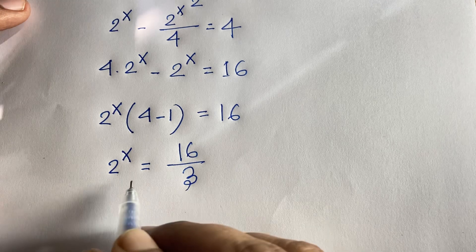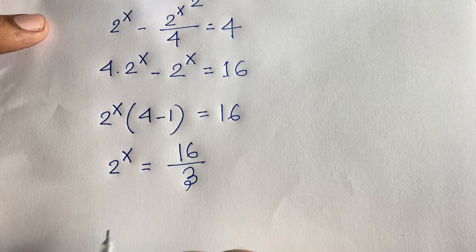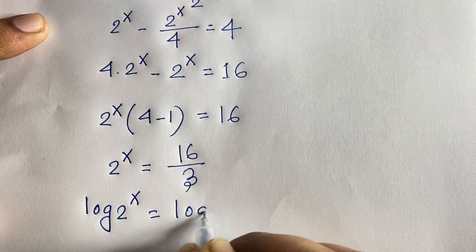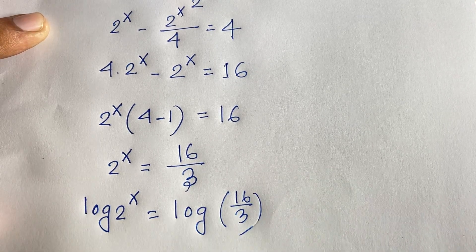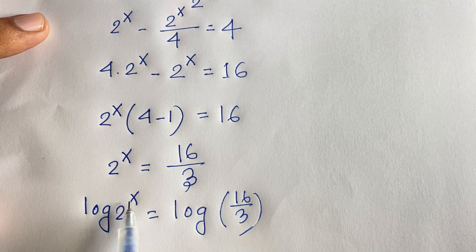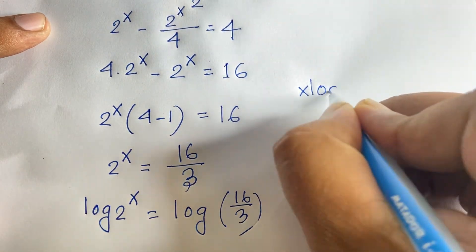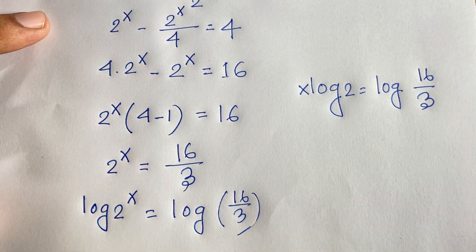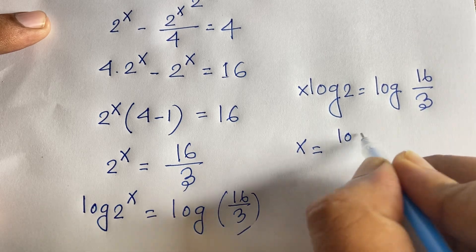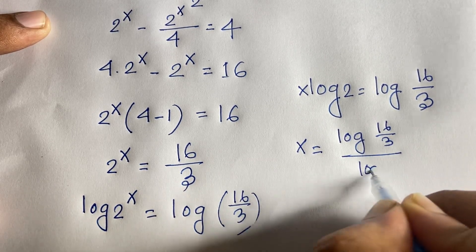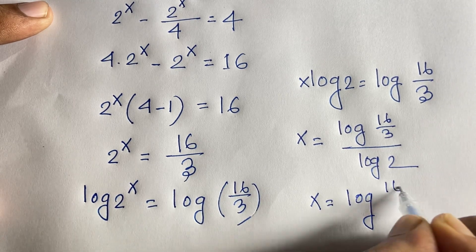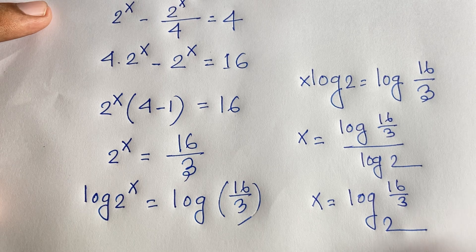To find the value of x, I apply the natural log to both sides: log of 2 to the power x equals log of 16 over 3. Using the logarithm power rule, x times log 2 equals log(16 over 3). Dividing both sides by log 2, we get x equals log(16 over 3) over log 2, which can be written as x equals log base 2 of (16 over 3). This is the value of x.